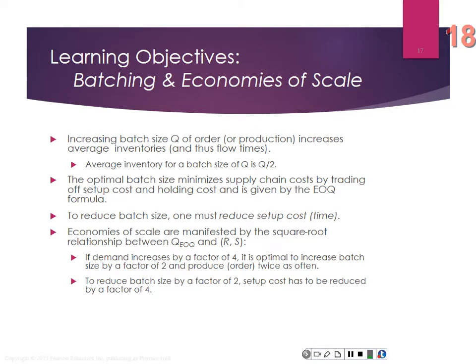Key insights: increasing batch sizes increases average inventory. The optimal batch size minimizes supply chain costs by trading off setup and holding costs. To reduce batch size, you have to reduce setup time — reduce the cost of transitioning from one type to another. Economies of scale are reflected by the square root relationship in the EOQ formula. If demand increases by a factor of four, it's optimal to increase batch size by a factor of two.